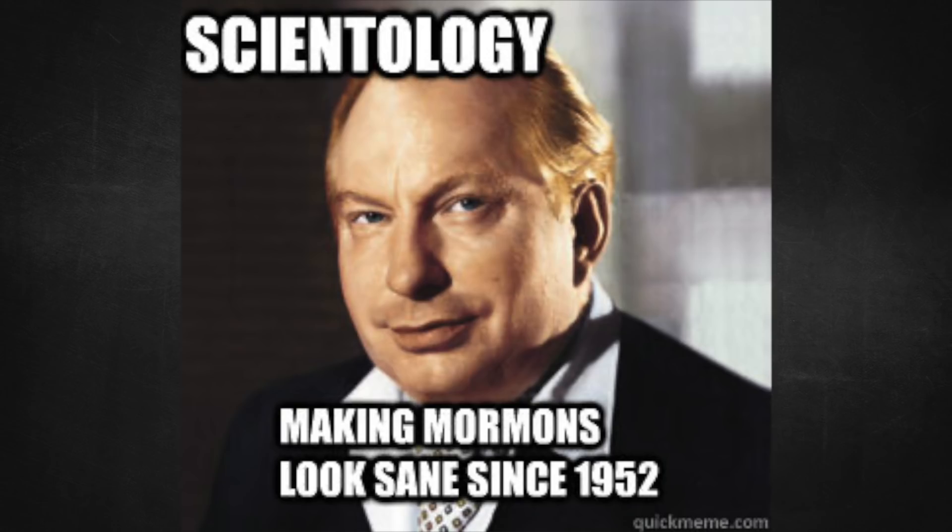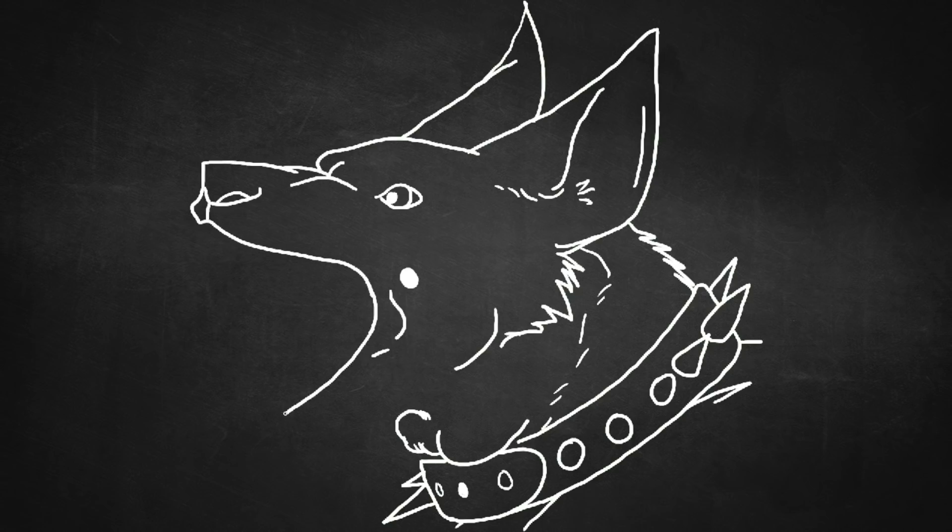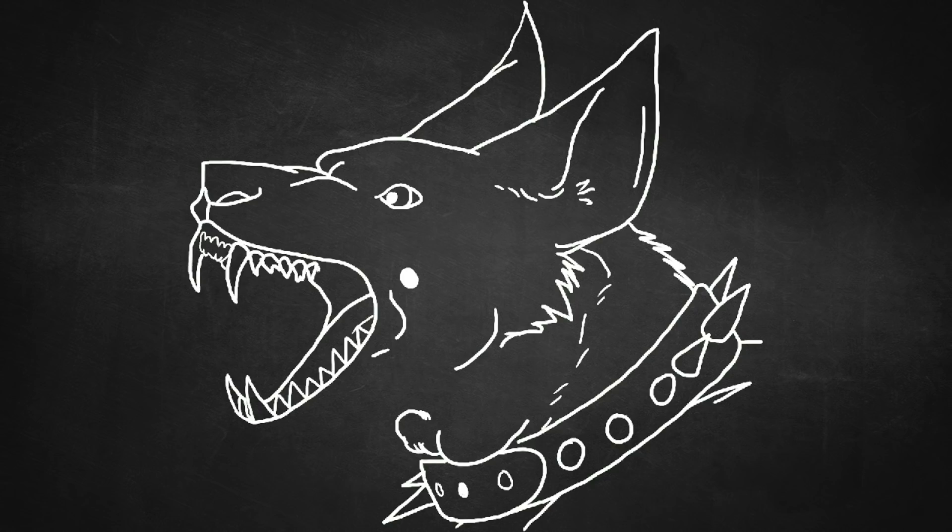Let's take a look at the next meme. Scientology. Making Mormons look sane since 1952. I don't know. Mormons have a really weird belief system, too. That's pretty debatable. I guess you could say Mormon beliefs seem more normal on the surface because it's all still loosely based on the Bible. Scientology isn't based on the Bible at all. It goes in a completely different direction, which we'll touch on in a few minutes. So I guess it would be fair to say that it makes Mormons look sane by comparison, but only because society is already more accepting of something that's loosely Bible-based. In reality, both of their belief systems are bizarre as they come.